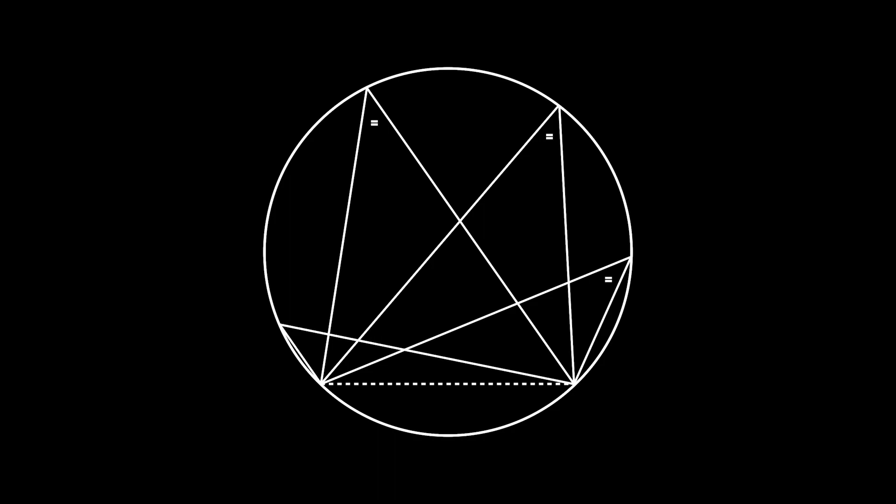Before we start on the proof, let us take a look at something we need to know first. Draw a chord in a circle. Draw two lines from the two ends of the chord to any point on the circle. The angles created by these lines will always be equal, no matter where the point is, as long as they are of the same side of the chord. These are called angles in the same segment.